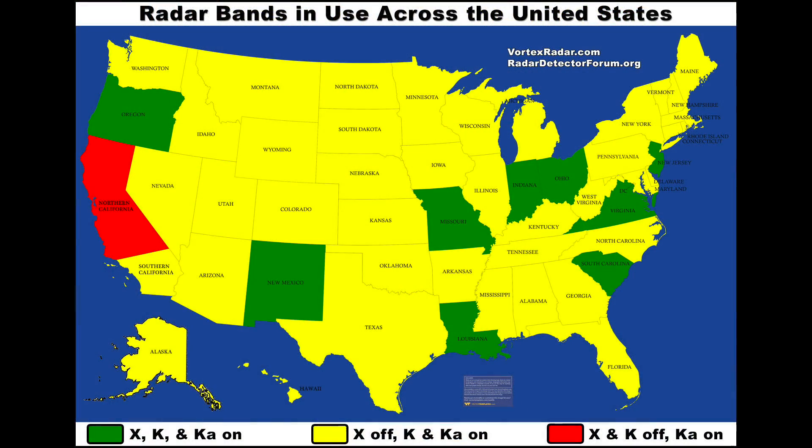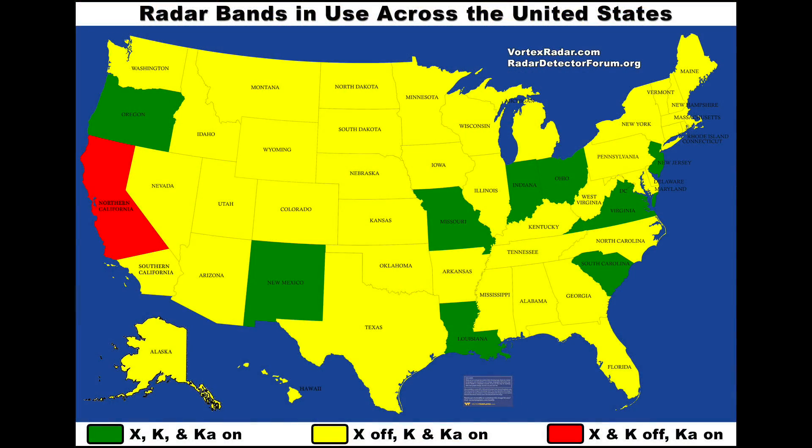We've gone over all that information and simplified everything so you can see immediately what radar bands are in use. Taking a look at this map, you'll see across the whole country there are three different colored states. The green states are where you're going to see X band, K band, and KA band in use. The yellow states are where you'll see K band and KA band. And finally, the red states — really just Northern California in this case — there's only KA band; no X band and no K band in use there.